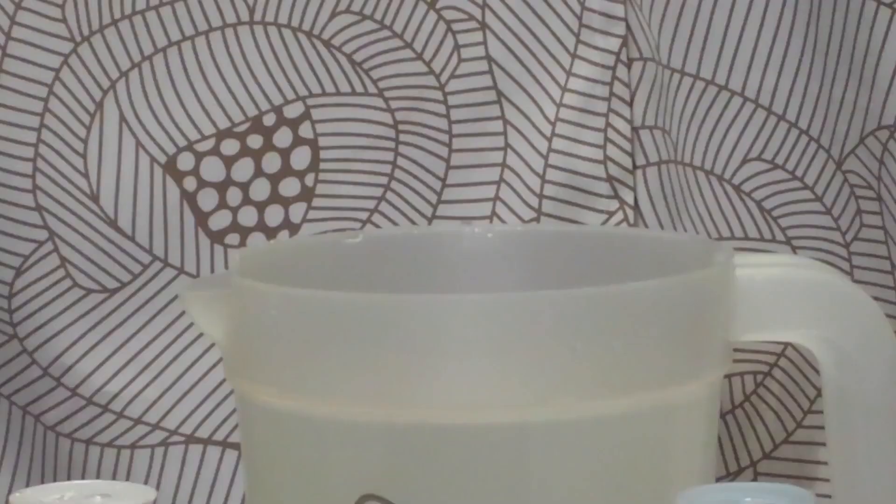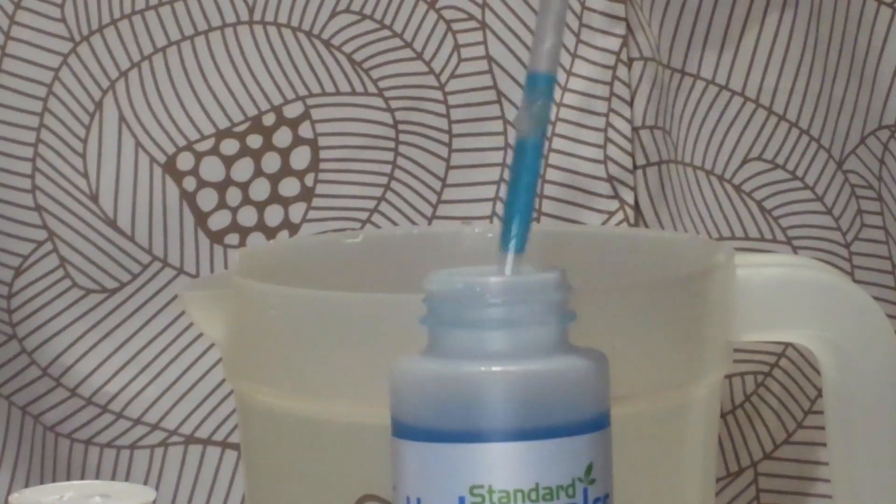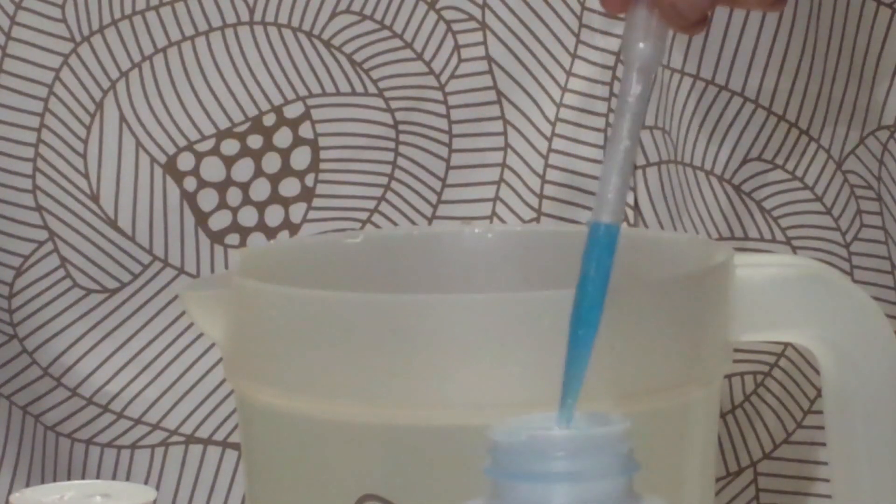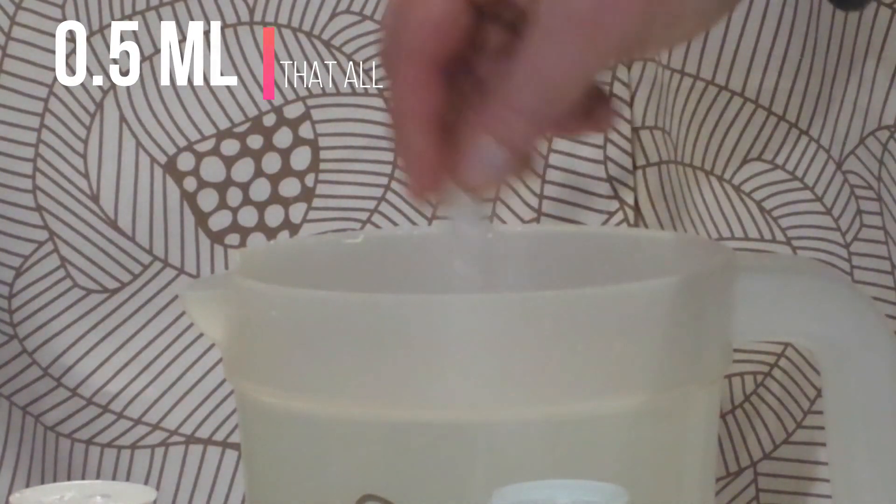Now I'm going to be using our pH up, which is approximately 12% alkalinity. It's probably the highest in industry. Now I only use half a mil there. That's it. Now let's let that combine.